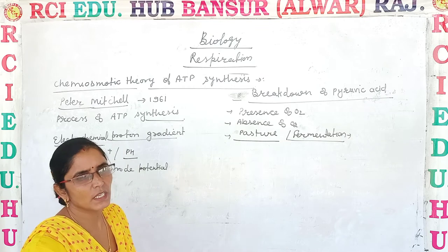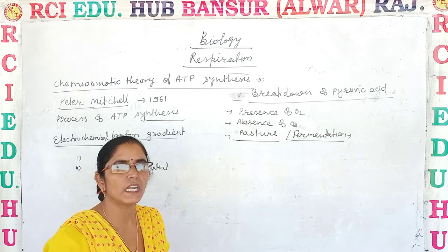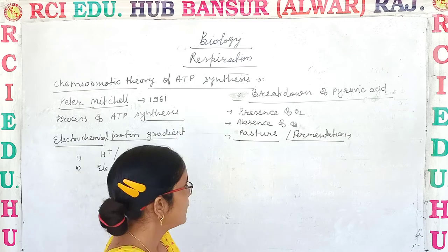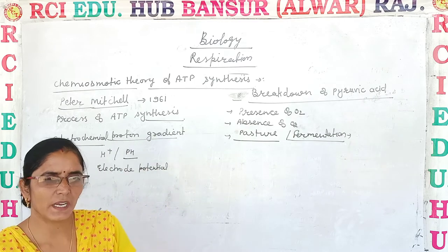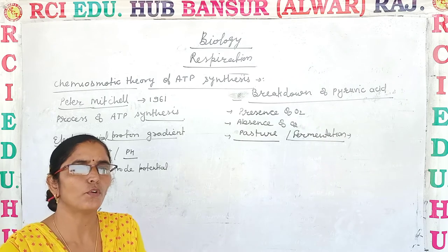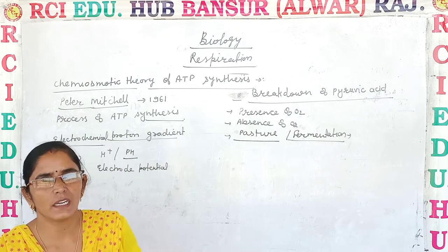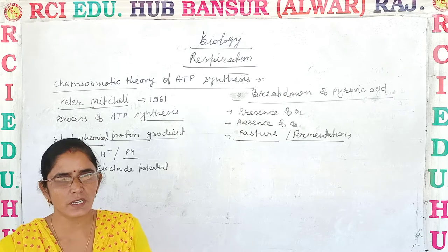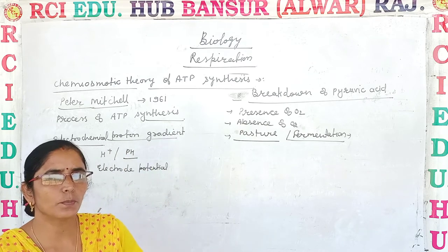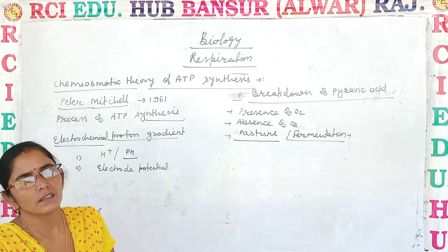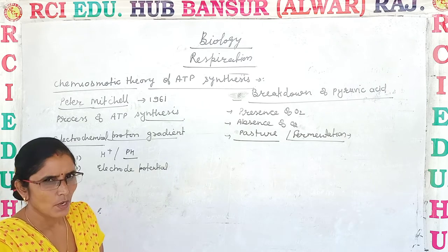Today let's discuss the chemiosmotic theory of ATP synthesis. This theory explains how formation of ATP takes place, how oxidation of NADH+H⁺ and FADH₂ takes place, and how the proton gradient develops and is utilized in the formation of ATP.